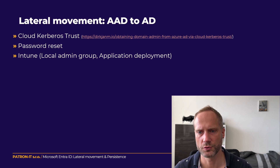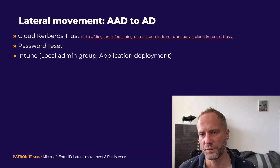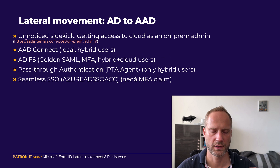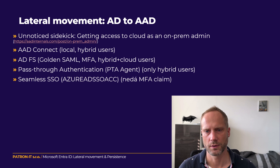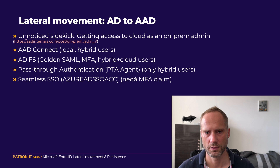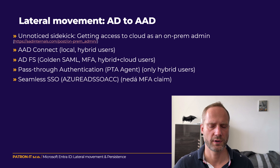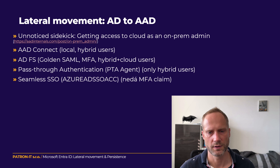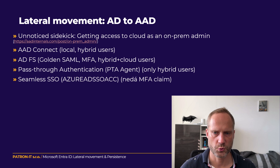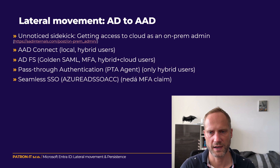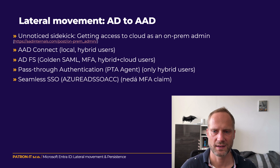There's not much difficulty — I recommend the first linked article from Dirk-jan for a great overview. The reverse direction also exists: if someone infiltrates on-premise Active Directory, they can move to the Entra ID environment. There are several ways, detailed in the slide links. Options include compromising Azure AD Connect, Active Directory Federation Services, pass-through authentication, or Seamless Single Sign-On. Each has advantages — some attack only hybrid users, some attack cloud-only users, some provide an MFA claim.